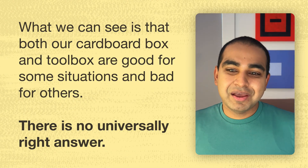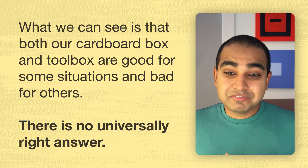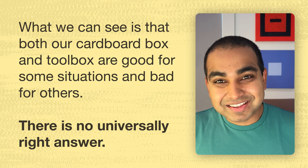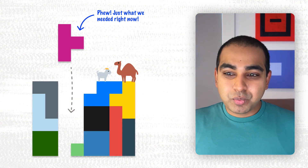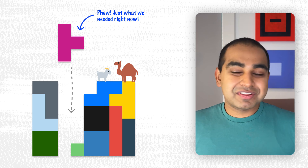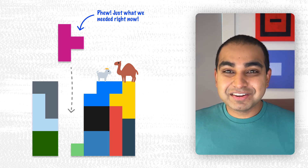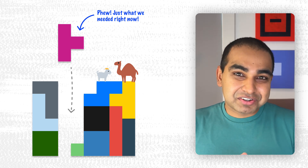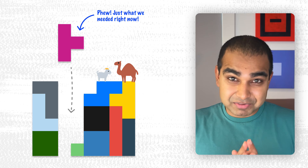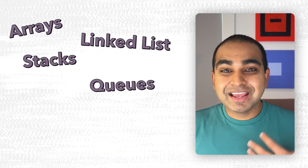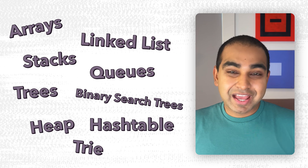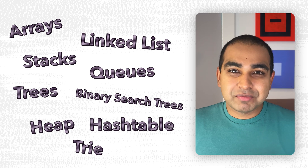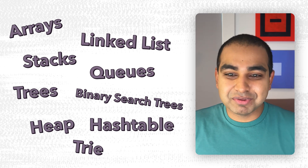What we can see is this: both our cardboard box and our toolbox are good for some situations and bad for others. There's no universally right answer — no perfect solution. When it comes to programming and computers, deciding which data structure to use is very similar to deciding whether to store tools in a cardboard box or a toolbox. Every data structure we will encounter is good for some situations and bad for others, and knowing which data structure to use and when is probably the most important skill — not just as a developer, but for anyone trying to better understand how to solve problems using computers.